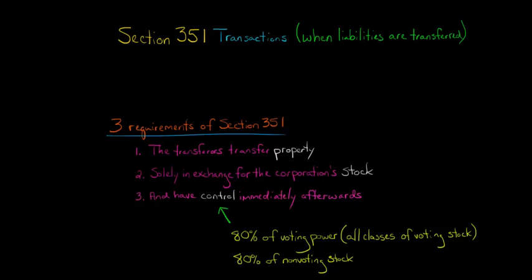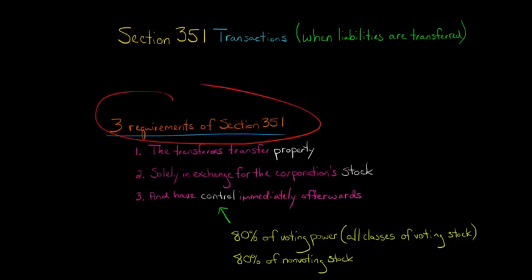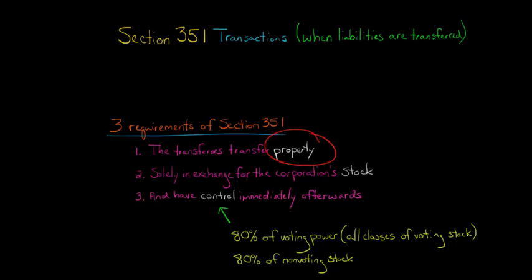In this video, we're going to talk about how to account for a Section 351 transaction when the transferor is giving liabilities to the corporation. The three requirements to have a Section 351 transaction are that the transferors are giving property to the corporation in exchange solely for the corporation's stock, and then the transferors have control of the corporation immediately afterwards.